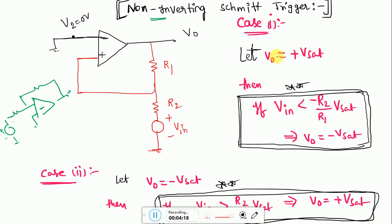Now there will be two cases. If you initially assume, let the output as positive, that is plus Vsat. Here the bias voltages are plus Vsat and minus Vsat. Now if you assume initially it as plus Vsat, then to change the output from plus Vsat to minus Vsat or to trigger from plus Vsat to minus Vsat, the necessary condition is Vin should be less than minus R2 by R1 into Vsat.